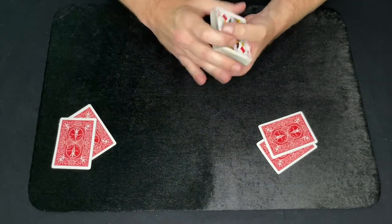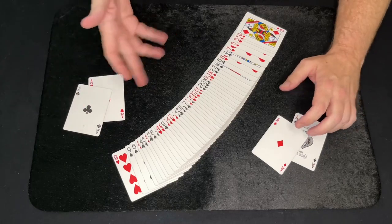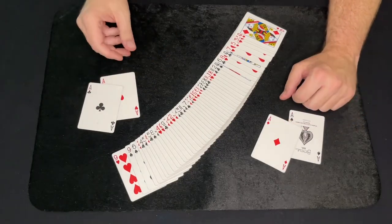It's just kind of a flashy way to produce four cards. If you wanted to do four selected cards, get them on the bottom and the top, you can produce them that way too.